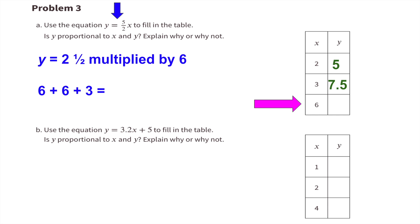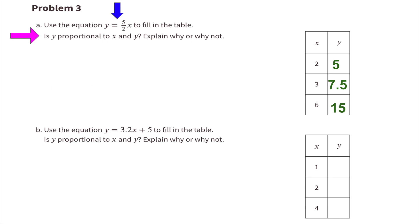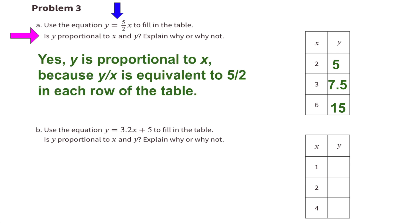When x is 6, y equals 2.5 multiplied by 6, or 6 plus 6 plus half of 6. 6 plus 6 plus 3 is 15, so when x equals 6, y equals 15. Yes, y is proportional to x because y divided by x is equivalent to 5 divided by 2 in each row of the table.